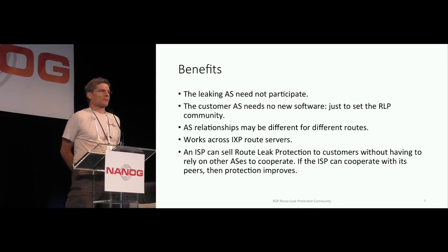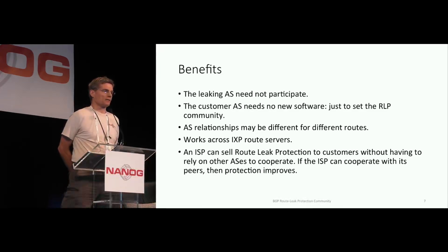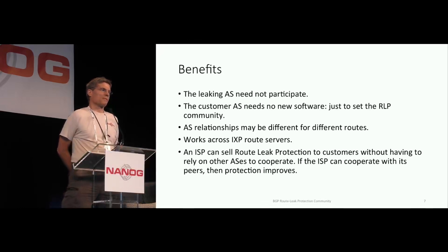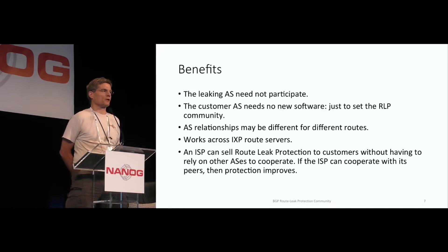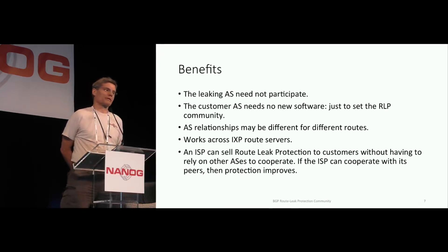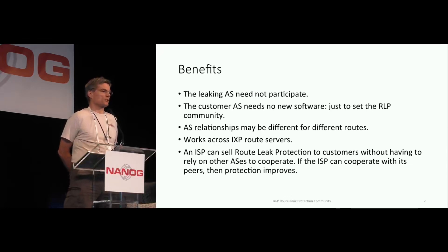There are other proposals in the IETF for how to fix this. One of them is to put a bit in-band into the actual route that is leaking. That requires the AS that's leaking to pass that bit through. There's no such thing as a transitive attribute in BGP anymore — because some years ago there were bugs where routers crashed from unknown attributes, so everyone added protection to drop unknown attributes. So transitive attributes get dropped. For this proposal, the leaking AS does not need to pass anything and does not need to upgrade any code.